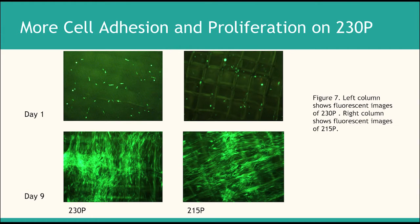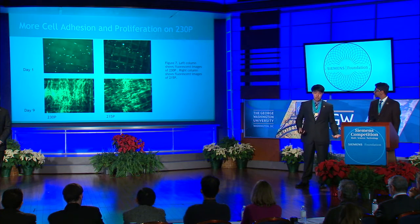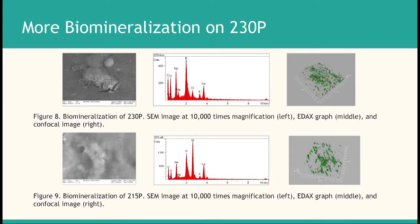Next, looking at the fluorescent images, on the left is 230P and on the right is 215P. On day one after cell plating, there are more cells on 230P than on 215P. As the cells grow, the green signal is much stronger on 230P, indicating more proliferation. For biomineralization, the SEM image confirms cells are present on the surface, and the EDAX graph shows peaks of phosphorus and calcium for both cases, indicating some level of biomineralization and calcification. The confocal microscope results show more biomineralization on 230P than on 215P, as indicated by the strong red region in the top image.